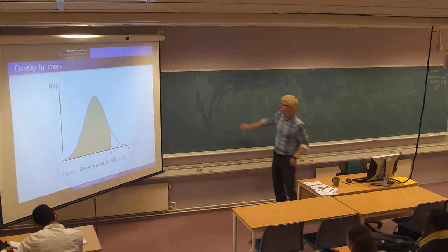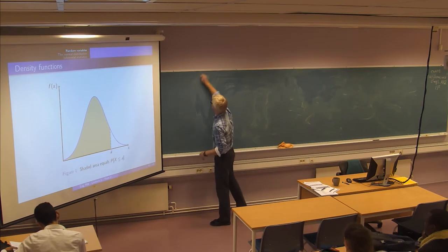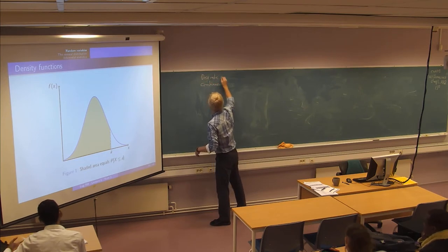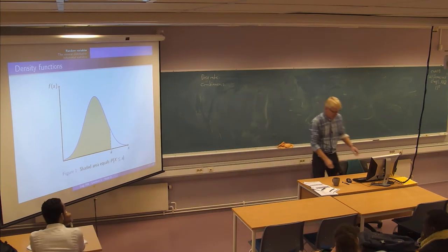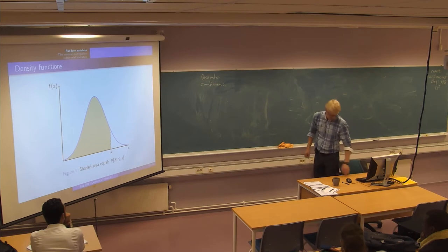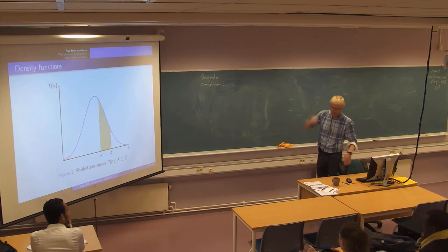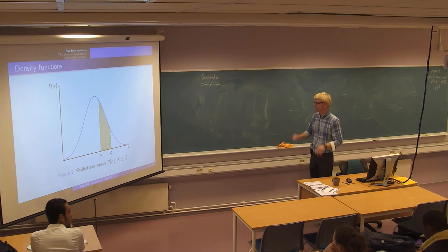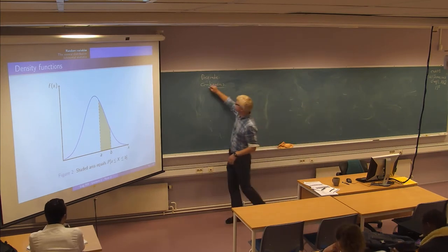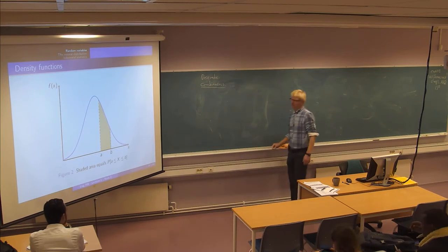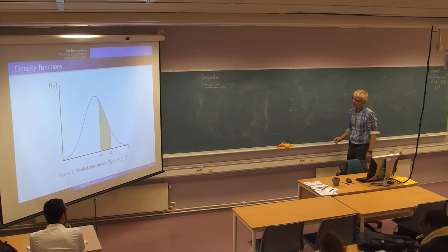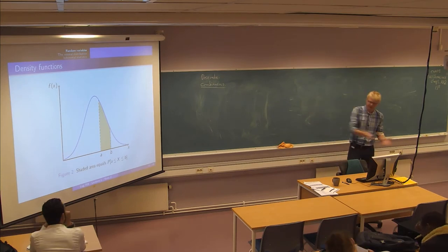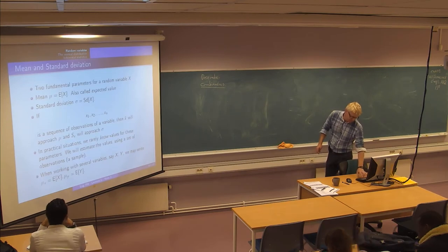We're talking about random variables, discrete or continuous. For continuous variables, we need to specify the probabilities in terms of a density function. For discrete, we could just specify directly the probabilities of getting x equal to whatever.